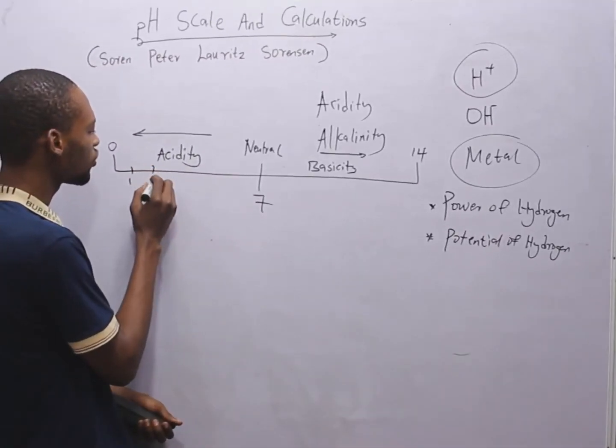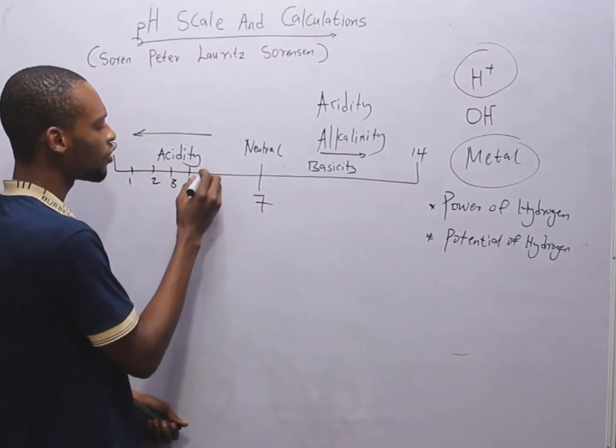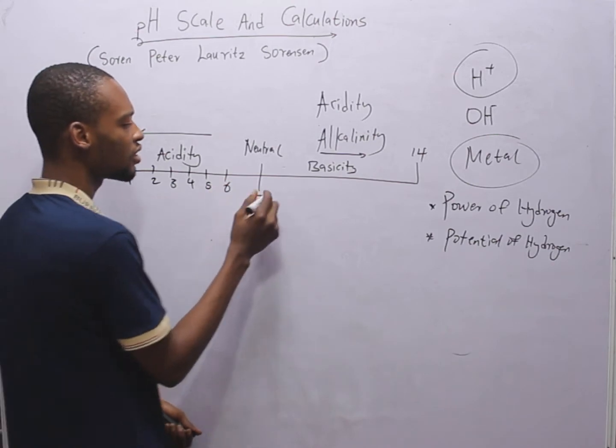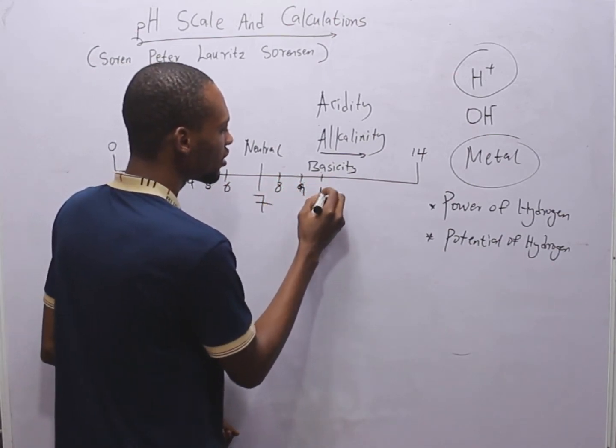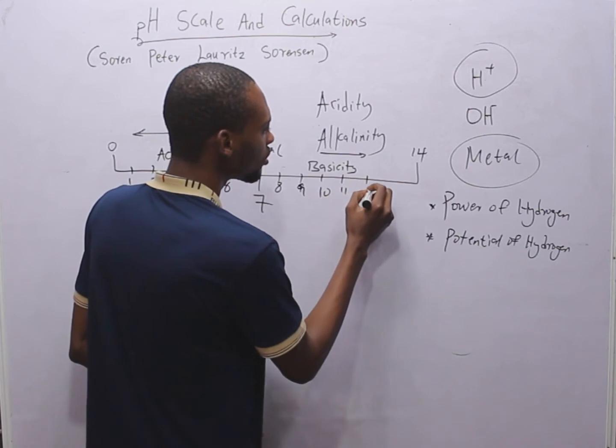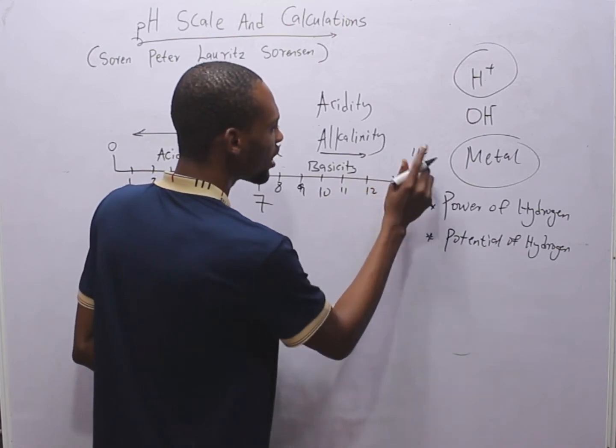This is one, two, three, four, five, six, seven, eight, nine, ten, eleven, twelve, thirteen, and fourteen.